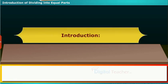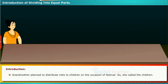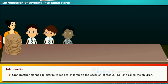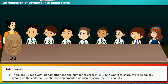Now we are going to learn how to divide into equal parts. Grandmother planned to distribute rotis to children on the occasion of a festival, so she called the children. There are 32 rotis with grandmother and the number of children is 8. She wants to share the rotis equally among all the children, so she implemented an idea to share the rotis equally.